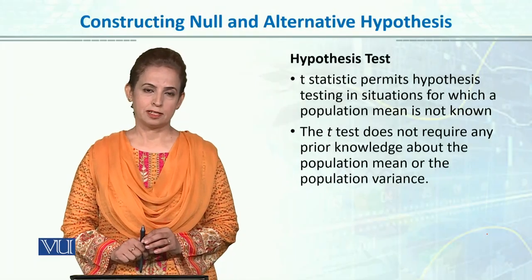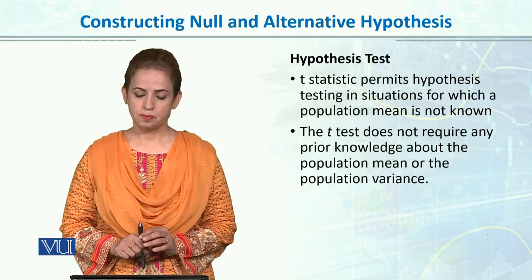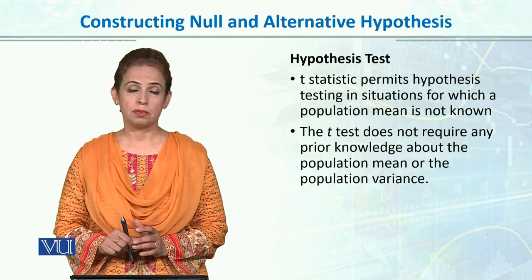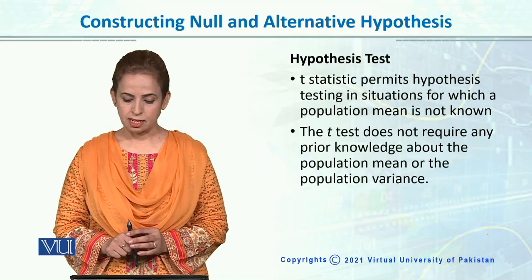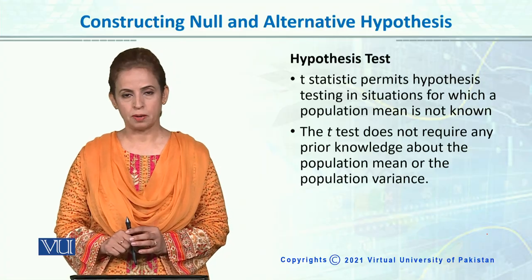Constructing Null and Alternative Hypothesis in the T-Test. T-Statistics permit hypothesis testing in situations for which a population mean is not known or population sigma is not known. T-Test does not require any prior knowledge about the population mean or the population variance.